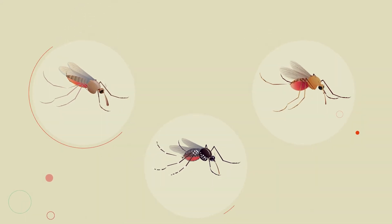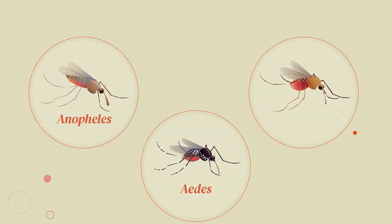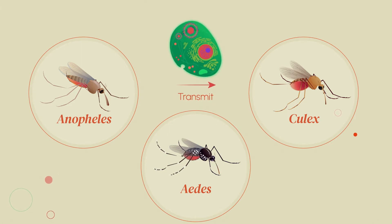If a mosquito belongs to one of the genera Anopheles, Aedes, or Culex, then it may be able to transmit disease.